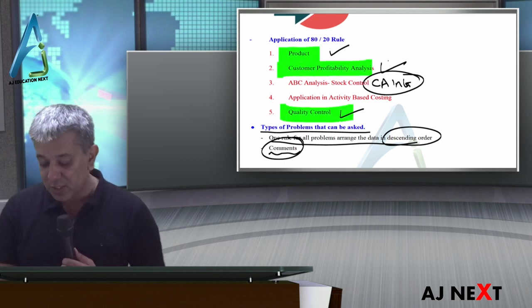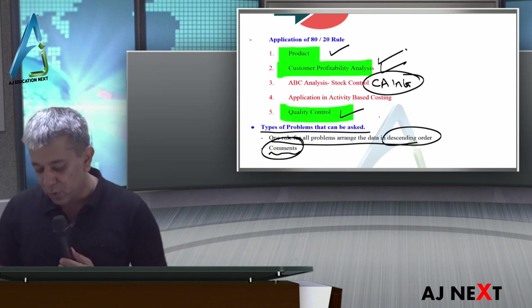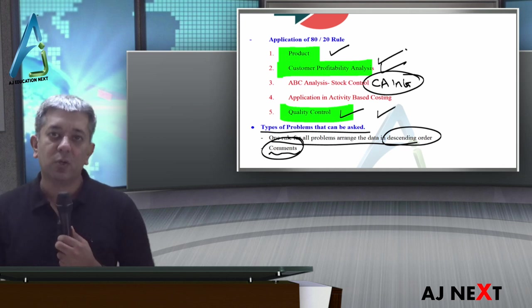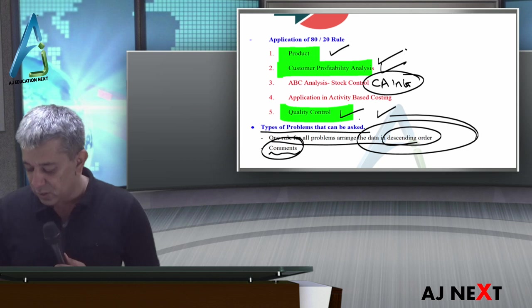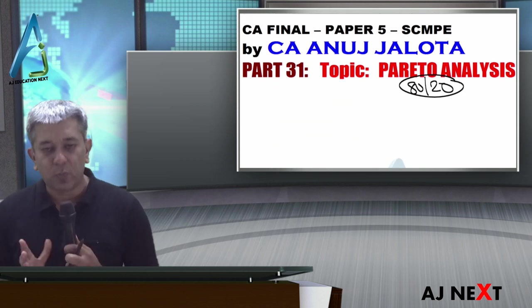Which products are important? Which customers are important? Which faults are occurring the most? Do remember to convert things into descending order, then solve further. Thank you, I'll see you all in the next lecture. This was quite a small one I think. I'll see you all in the next lecture. Bye.